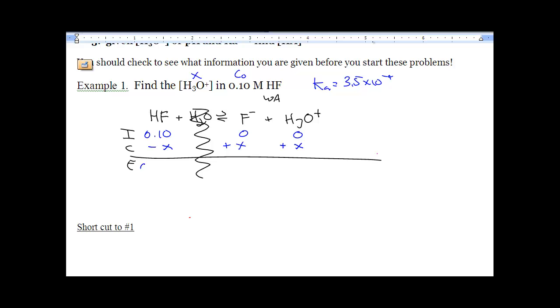At equilibrium we're going to have 0.1 minus X and X. So let's write out the Ka expression and let's plug in what we know: 3.5 times 10 to the negative 4 from my chart equals X squared over 0.10 minus X.